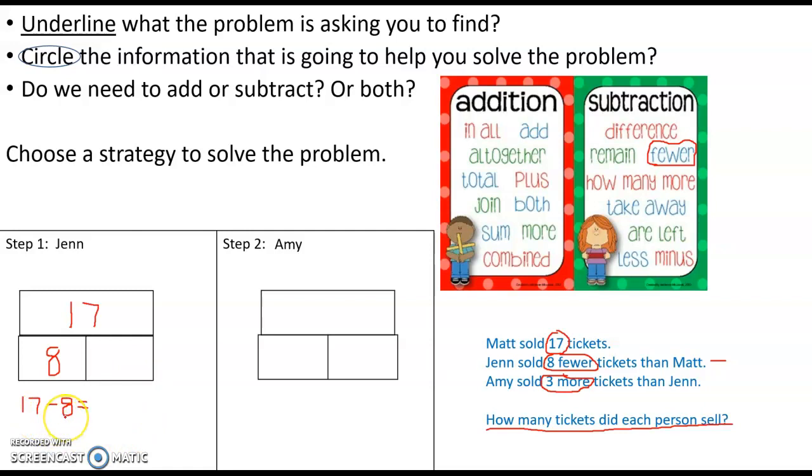17 minus 8. I know that if I take 7 away from 17, I get 10. I need to take 1 more away to take away 8. So 17 minus 7 is 10, minus 1 more equals 9. So how many tickets did Jen sell? She sold 9.